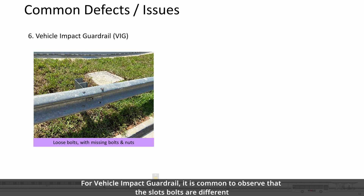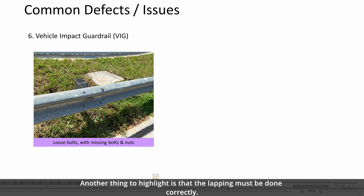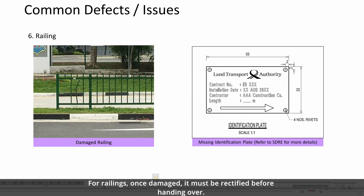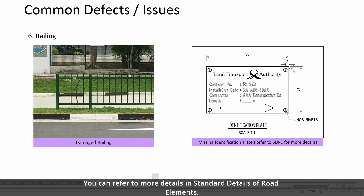For vehicle impact guardrail (VIG), it is common to observe that the slot blocks are different from those specified in the SDRE, with loose blocks, missing blocks and missing nuts. The lapping must also be done correctly. For railing, once damaged, it must be rectified before handing over. We also highlight that the railing must have an identification plate installed. You can refer to more details in the standard details of road elements.